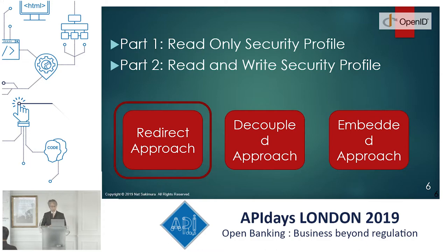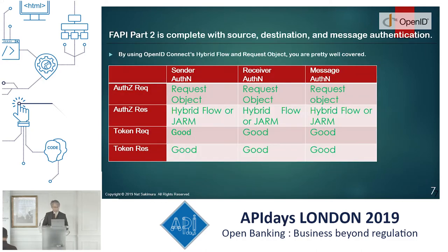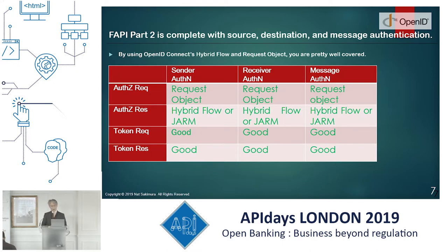Parts one and two — the read-only and read-and-write security profiles — use the redirect approach. In PSD2 speak, there are three approaches: redirect, decoupled, and embedded. These two cover the redirect approach. The authorization request is protected by JWT-protected request objects — JAR — so there's sender authentication, receiver authentication, and message authentication because it's signed. For the authorization response, we have two options: hybrid code flow or JARM, which puts all the authorization response into JSON and protects it using JWT.